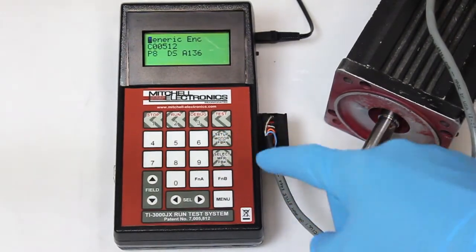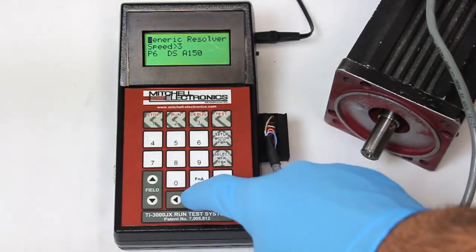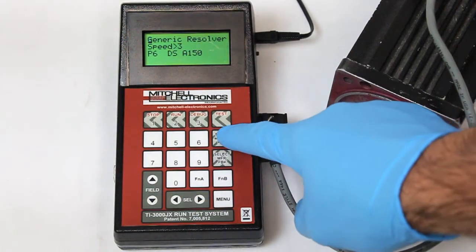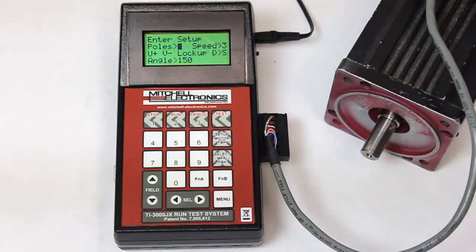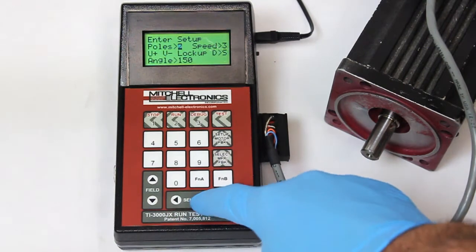Press the Select Manufacture Feedback button and use the arrow keys to find the generic resolver selection. Press the Setup Motor Feedback button and enter your setup details using the arrow keys to navigate fields and change selections.